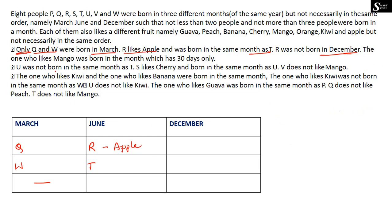The next clue says the person who likes mango was born in the month which has 30 days only. March has 31 days, June has 30 days, and December has 31 days. So the person who likes mango must be born in June. We know mango has to be placed in the month of June.